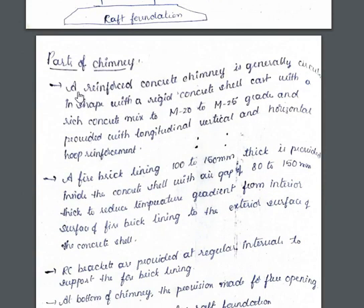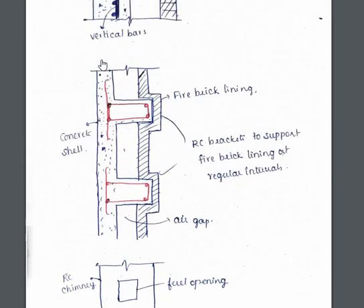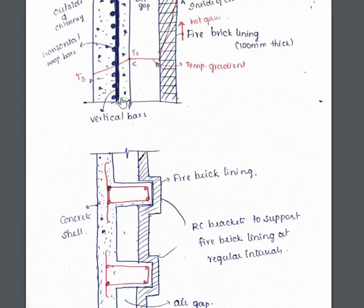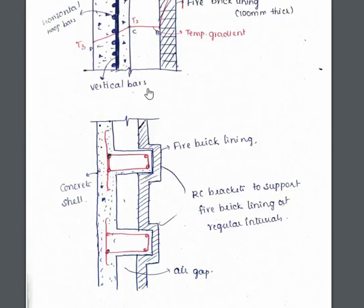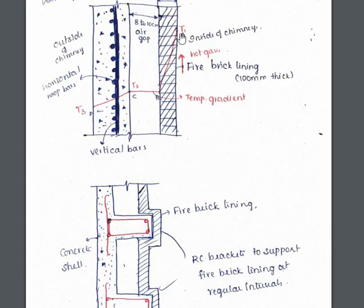A reinforced concrete chimney is generally circular in shape, with a rigid concrete shell cast with a rich concrete mix of M20 to M25 grade, provided with longitudinal vertical and horizontal hoop reinforcements. A fire brick lining 100 to 150 mm thick is provided inside the concrete shell with an air gap of 80 to 150 mm to reduce the temperature gradient from the interior surface of the fire brick lining to the exterior surface of the concrete shell.